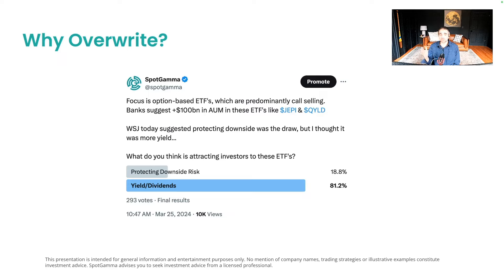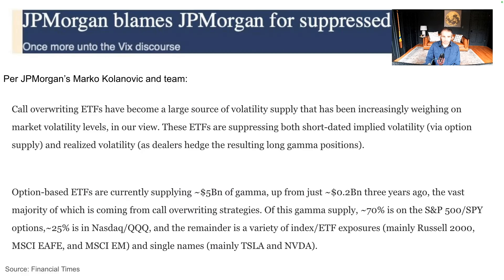These overriding funds do hedge you if the market goes down a little, padding some losses, but they also cap your gains — which is a major problem. There was a headline from the Financial Times that was just hilarious: 'JPMorgan blames JPMorgan for suppressed volatility.' The idea is that JPMorgan analysts like Marco Kolanovic put out a paper saying that giant call overriding funds are supplying a ton of gamma and vega to the street and suppressing volatility.